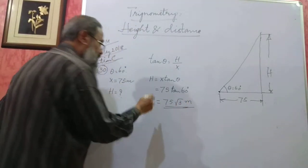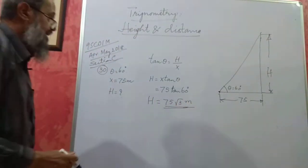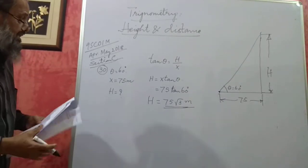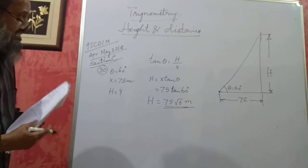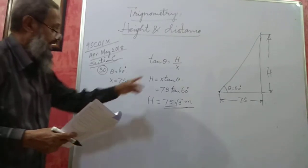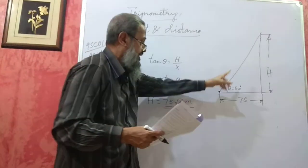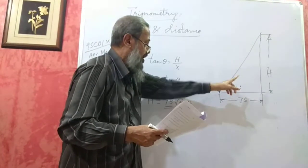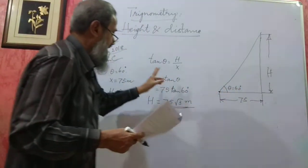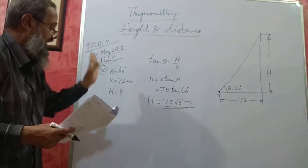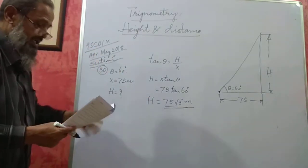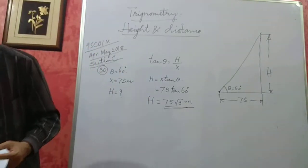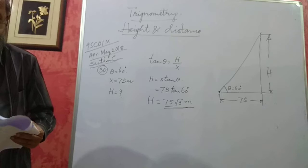This is all you have to do for 5 marks. If you know that tan of an angle in a right angle triangle equals opposite side by adjacent side, you will get the answer. This is the problem from the 2018 paper.